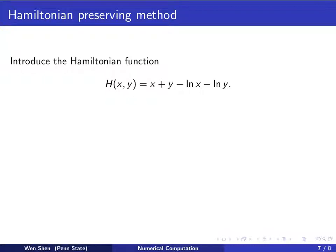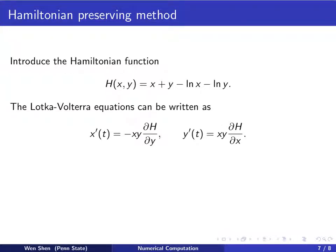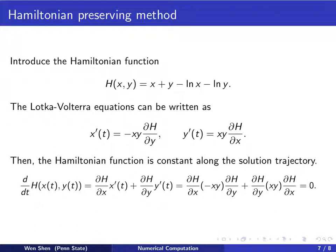We now look at another property that's satisfied by the Lotka-Volterra system. Introduce a function called a Hamiltonian function as follows. H is a function of x, y, is now defined as x + y - ln(x) - ln(y). And then the Lotka-Volterra equations can be written as x'(t) will simply be -xy ∂H/∂y, and y'(t) will be positive xy ∂H/∂x. Well, you can easily carry out the partial derivative and verify that.